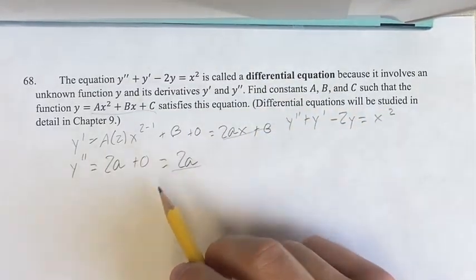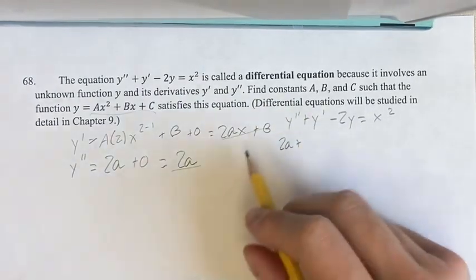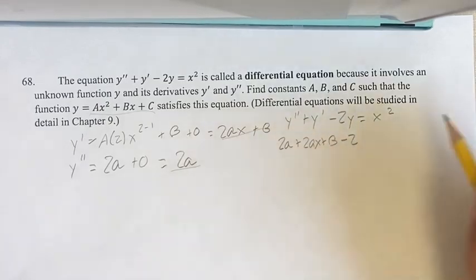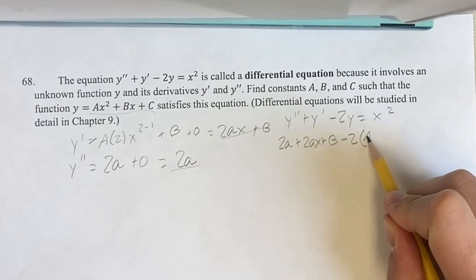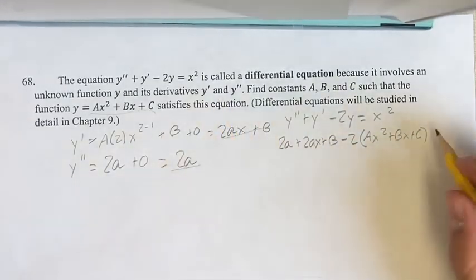...we know that the second derivative is 2a, plus the first derivative is 2ax plus b. And then we're saying minus 2y, which is ax squared plus bx plus c, is equal to x squared.